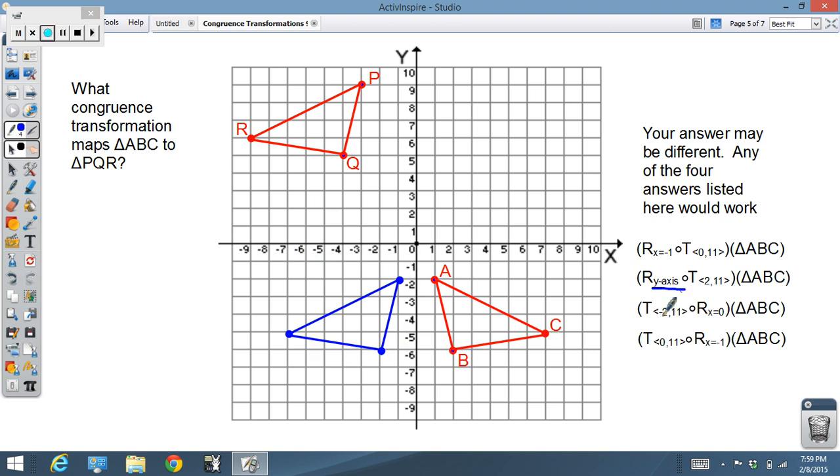Either of those do the translation, then the reflection. Notice that we could also do the reflection first, followed by the translation. Any of those answers would have worked. But some combination of a reflection and a translation gets me from RPQ to CAB.